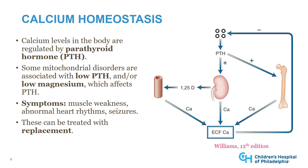Another potentially life-threatening problem in mitochondrial disorders is problems with calcium homeostasis. Calcium levels in the body are regulated by parathyroid hormone. In some mitochondrial disorders, particularly Kearns-Sayre syndrome, low parathyroid hormone levels can occur. This can reflect primary hypoparathyroidism and/or the effect of low magnesium levels from renal magnesium wasting. When magnesium is lost by the kidney, that adversely affects both PTH secretion and action, making it difficult to maintain normal calcium levels.